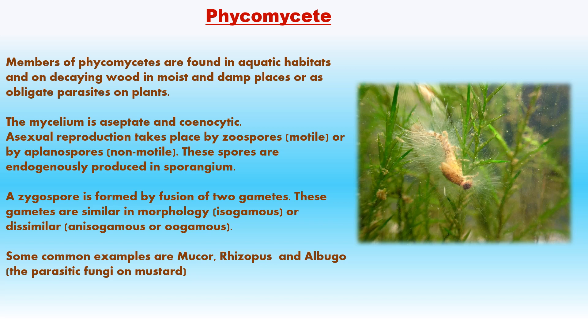Phycomycetes or Zygomycetes can be found in aquatic habitats, on decaying wood, in moist and damp places, or as obligate parasites on plants. The mycelium is aseptate and coenocytic — no cross walls — and the protoplasm has many nuclei. Asexual reproduction takes place by formation of motile zoospores or non-motile aplanospores, produced endogenously in the sporangium. They are called zygomycetes because of the formation of a diploid zygospore during sexual reproduction, formed by fusion of two gametes. The zygospore has a protective covering and can withstand extreme conditions. Examples: Rhizopus (bread mold), Mucor, and Albugo (parasitic fungi on mustard).